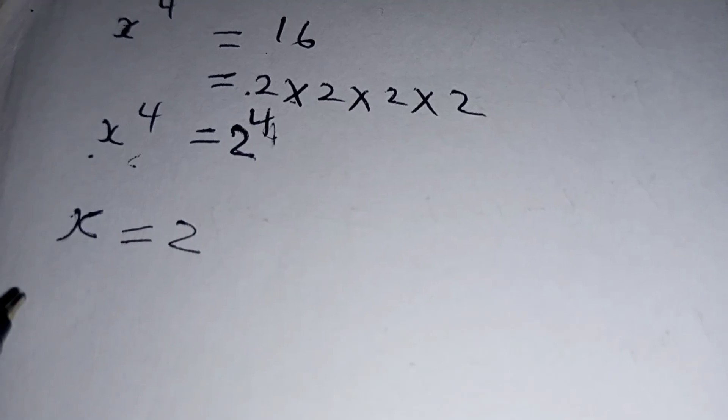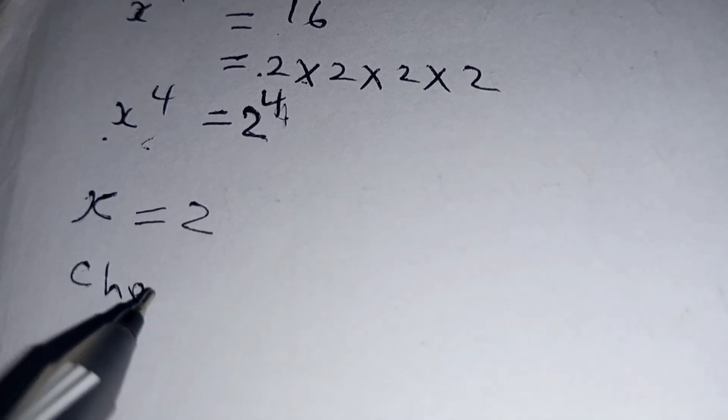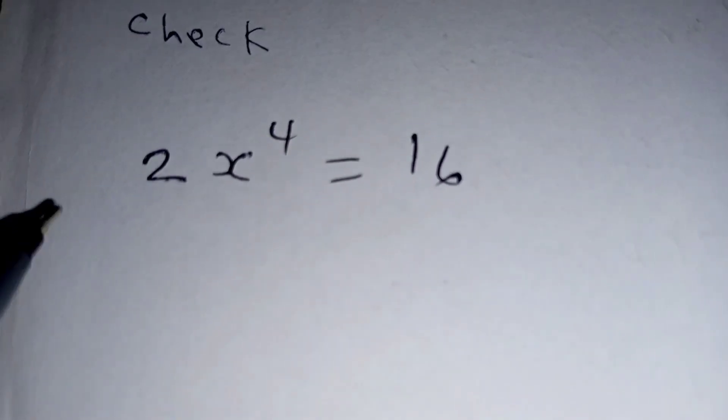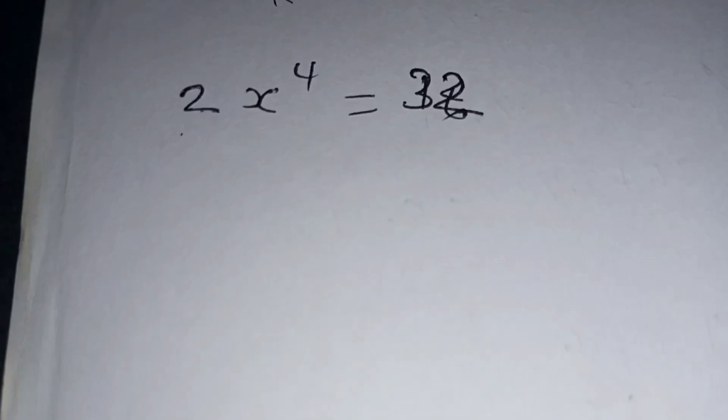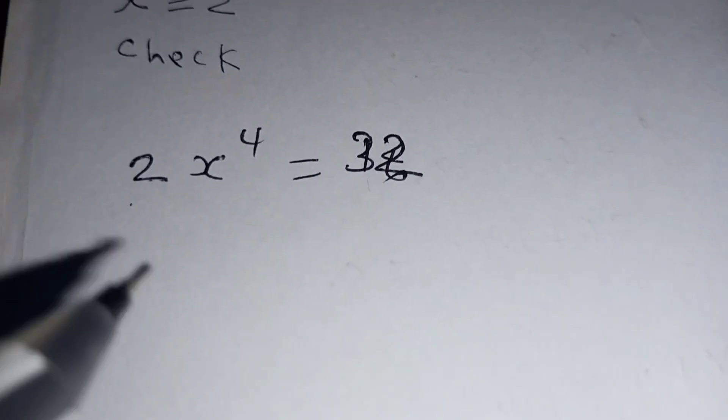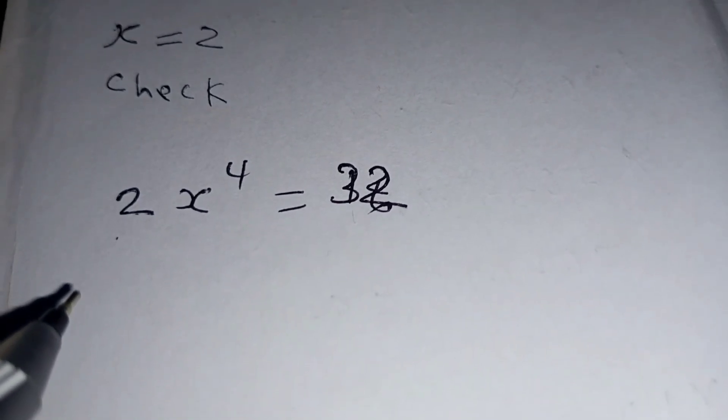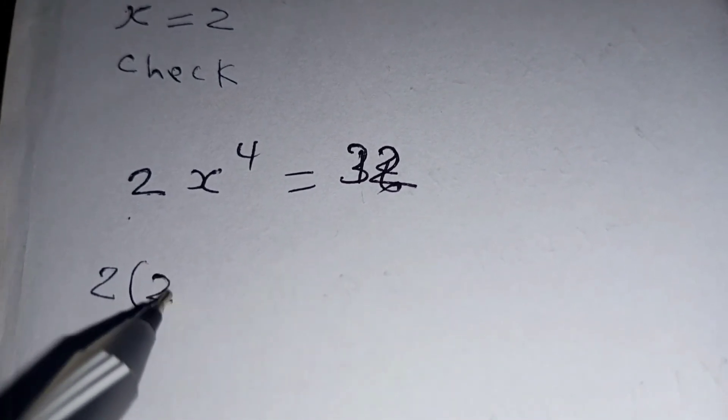Now let's check. So we have 2x^4 = 32 and we obtained our value of x = 2, so we substitute so that we have 2 times 2^4.